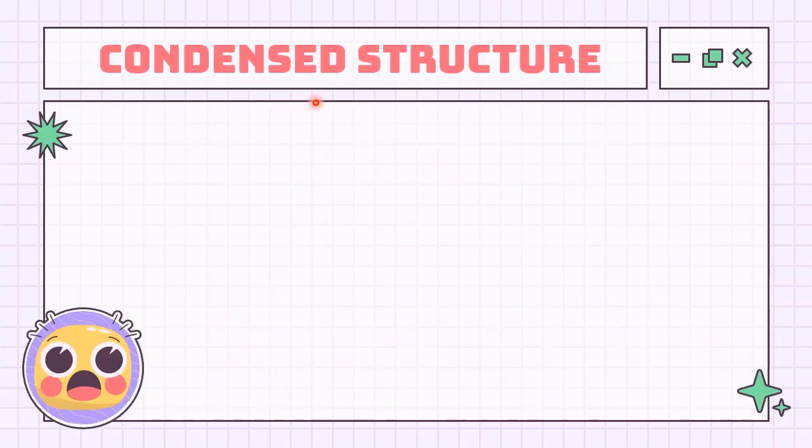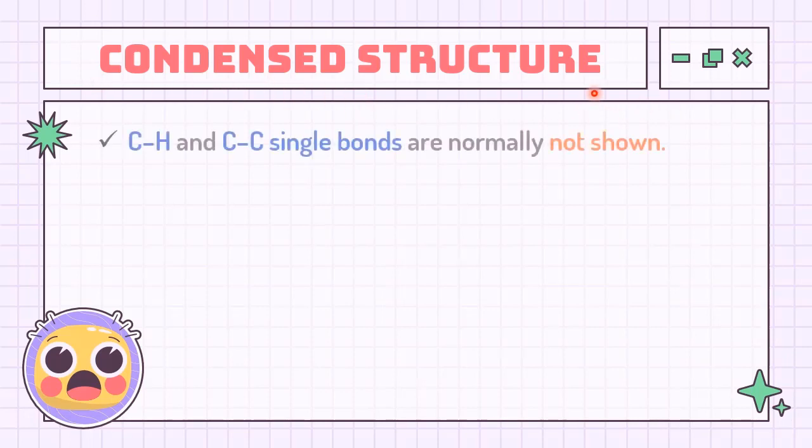Next, the name of this structure itself tells us that their relative placements are going to be compressed. They are called condensed structure. In this structure, all single bonds between carbon-hydrogen and carbon-carbon are not shown.